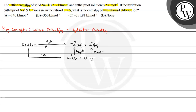All together, lattice enthalpy plus hydration enthalpy of Na+ plus hydration enthalpy of Cl- adds up to give the solution enthalpy of NaCl. So the equation is: enthalpy of solution of NaCl = lattice enthalpy + hydration enthalpy of Na+ + hydration enthalpy of Cl-. Substituting: 2 = 772 + delta hydration H(Na+) + delta hydration H(Cl-).